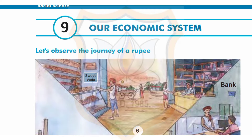What is an economic system? An economic system is a means by which societies or governments organize and distribute available resources, services and goods across a geographic region or country.